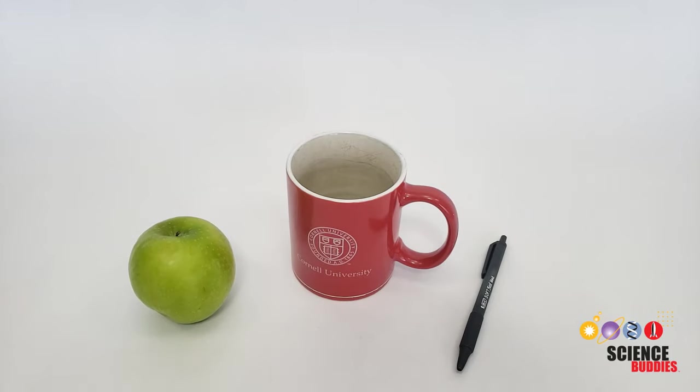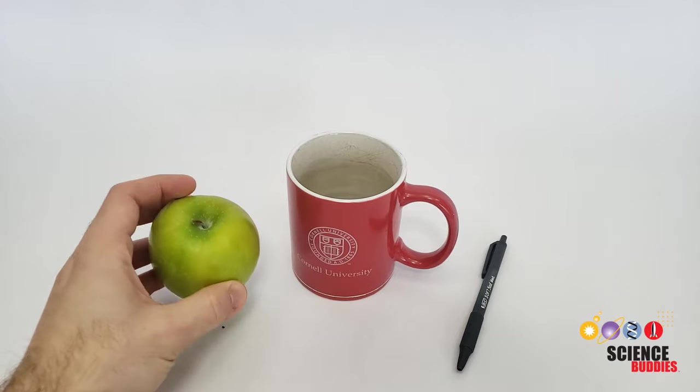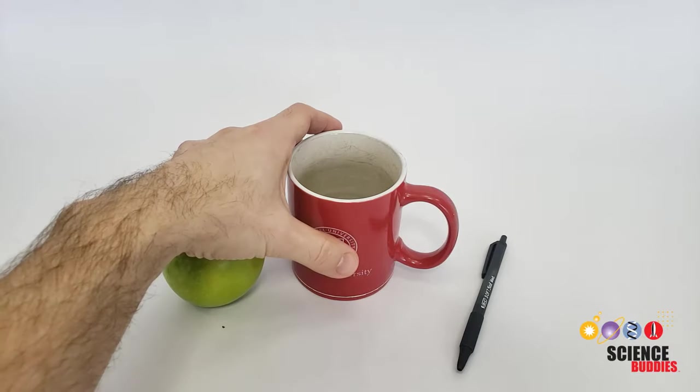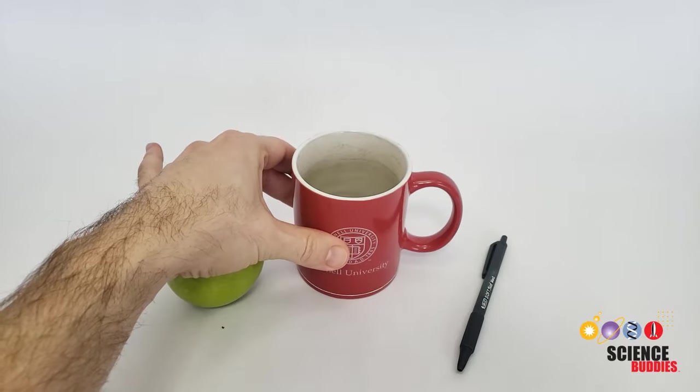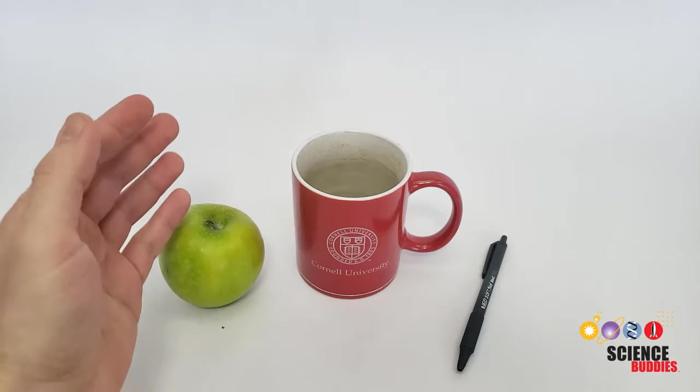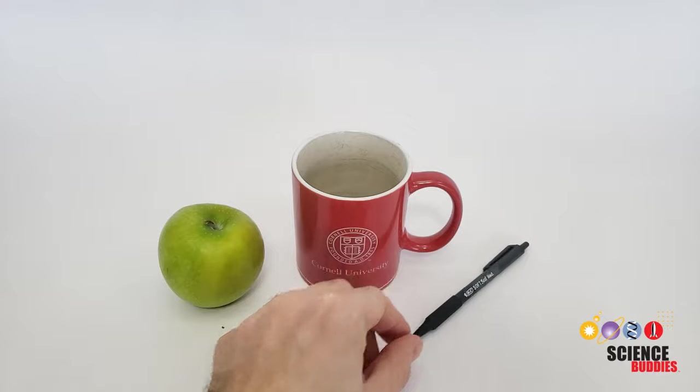It turns out that building a robotic hand that's as versatile as the human hand is incredibly difficult. Scientists and engineers have been trying for decades, and we can build robotic grippers that are good at picking up one specific object, but building one that's versatile and can pick up many different shape objects easily is very hard.